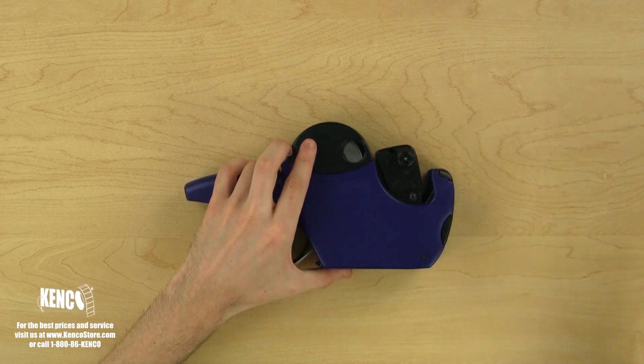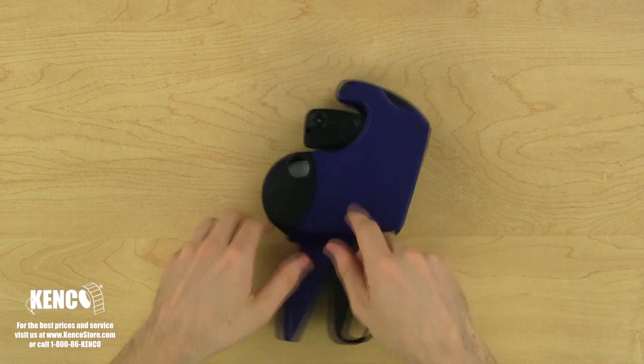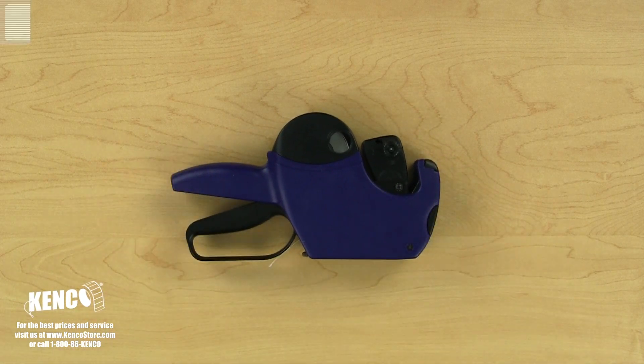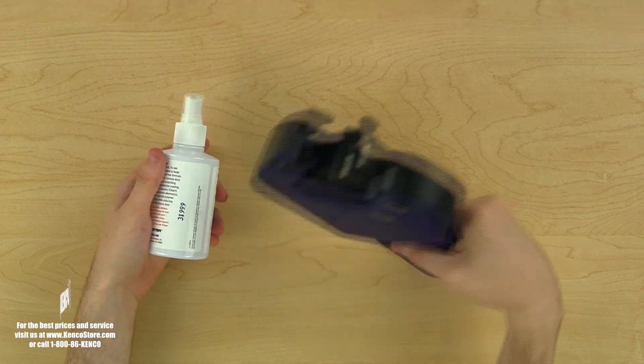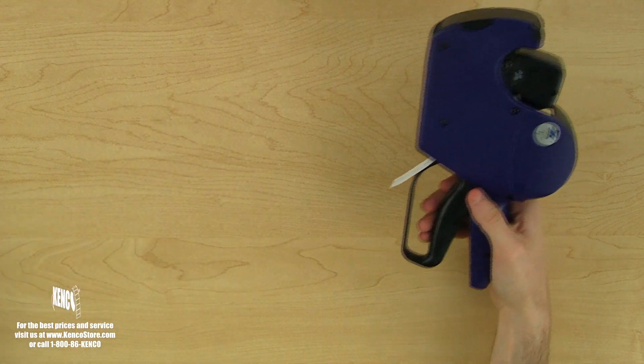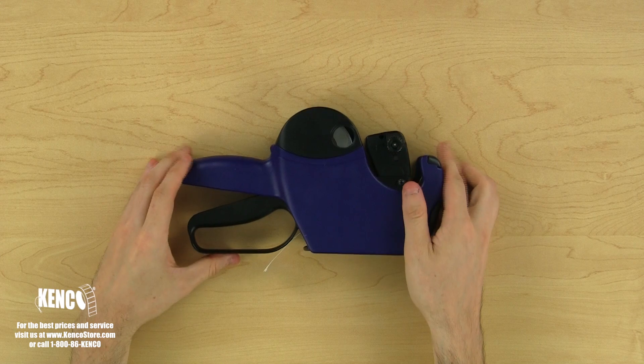Now that it's printing perfectly, we are ready to begin labeling. To label an item, simply pick up the gun, squeeze and release the trigger once, hold the price gun directly over the product, then just roll the label on your product, and you're all done.